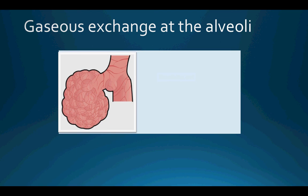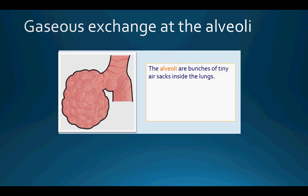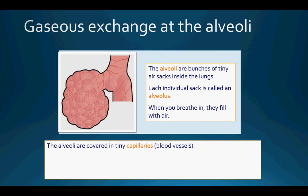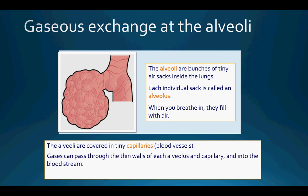Gaseous exchange at the alveoli will be covered in more detail in the following video, but here is a brief overview. The picture shows the alveoli — bunches of tiny air sacs inside the lungs. Each individual sac is called an alveolus. When you breathe in, they fill with air. The alveoli are covered in tiny capillaries — blood vessels — and gases can pass through the thin walls of each alveolus and capillary into the bloodstream. Gases can also pass from the bloodstream back into the alveolus.